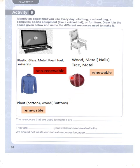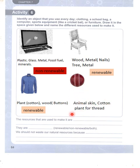And then a cricket ball — do you know what it is made of? It is made of animal skin and cotton plant for thread. Thread comes from the cotton plant. This is again a renewable resource.